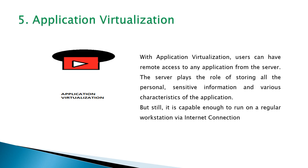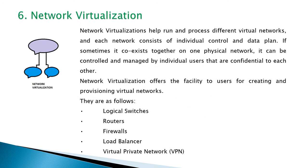The fifth type is application virtualization, where the user can have remote access to any application from the server. The server stores all personal and sensitive information and application characteristics. The sixth type is network virtualization, which helps run and process different virtual networks, each with individual control and data planes, offering facilities to create logical switches, routers, firewalls, load balancers, and virtual private networks.